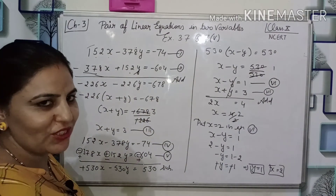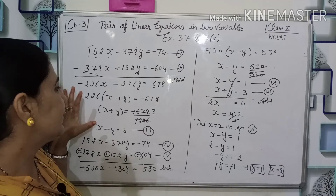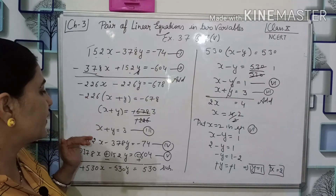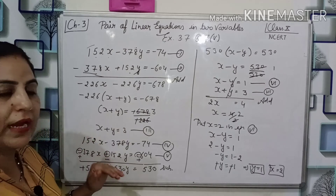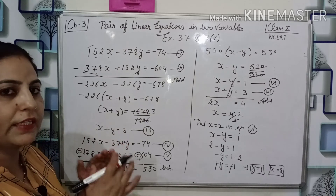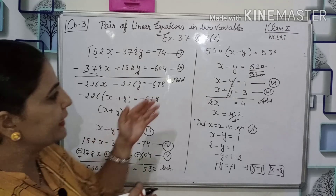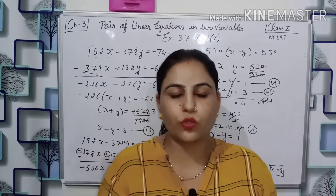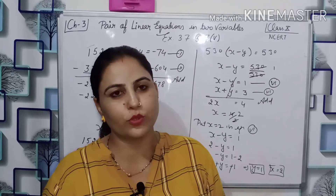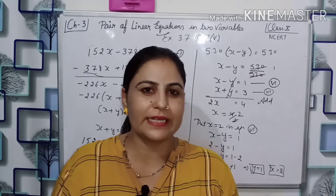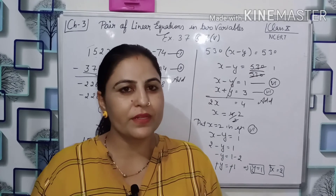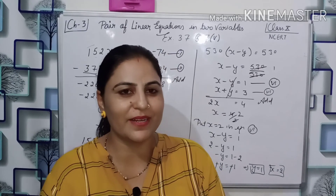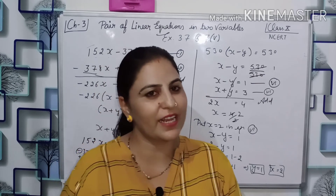This is a special question, so remember when to apply this rule. We apply it only when the coefficients are swapped between the two equations. We do this to shorten the equations into a simpler form so we can solve them easily. Question 7 with all 5 parts is now complete. Only Question 8 remains, which we will do quickly to complete Chapter 3 — it was quite a big chapter. See you in the next question, thank you.